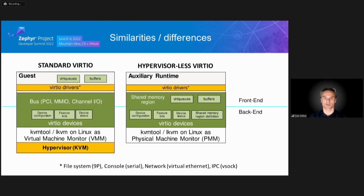Here we can see how hypervisor-less VirtIO differs from standard VirtIO. In classical VirtIO, data can reside anywhere in guest memory space because the hypervisor can access it. Since we no longer have a hypervisor, the data needs to be in a pre-shared memory region. There are various mechanisms to ensure this: we can either change the drivers to allocate data from the shared memory region, or we can keep the drivers unmodified and use bounce buffers to copy the data to and from the shared memory region.